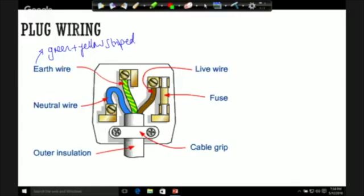The live wire is brown and the neutral wire is blue. Now I've got a little bit of a silly way to remember the live wire. You remember the live wire by saying you have to be alive to poo and poo is brown.